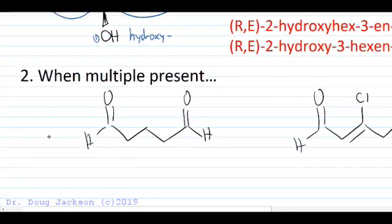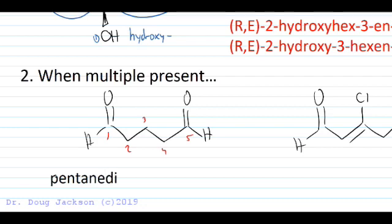Now, when multiple aldehydes are present, such as this first example here, a simple one, we number our chain. It's symmetrical either way, left or right. And it's a pentane. Instead of pentanal, we have a pentanedial. So the E goes in to separate the consonants N and D to make it easier to say.